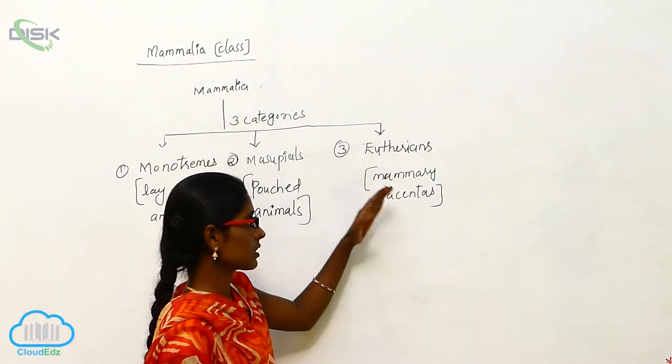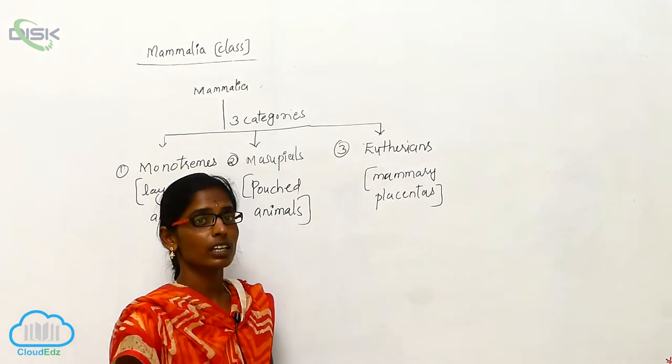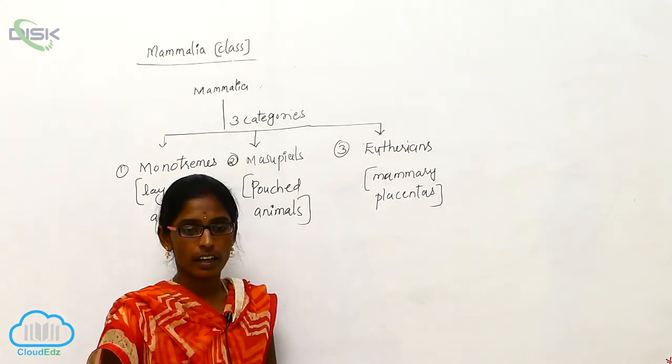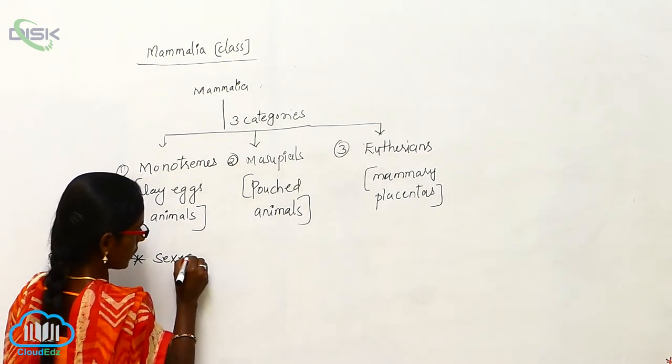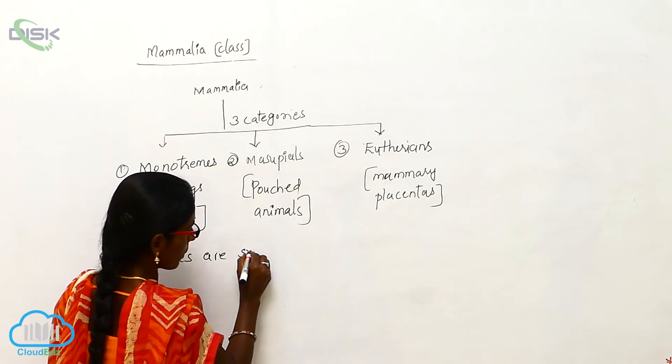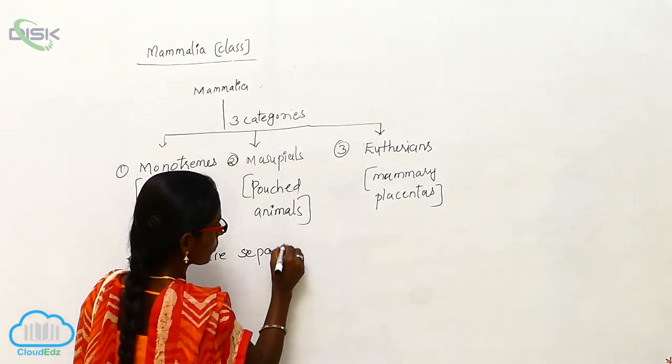Eutherians have placentas, and sexes are separated.